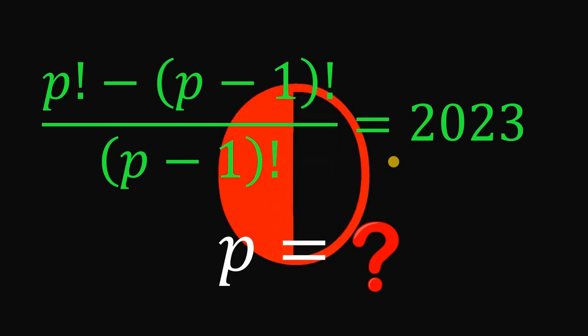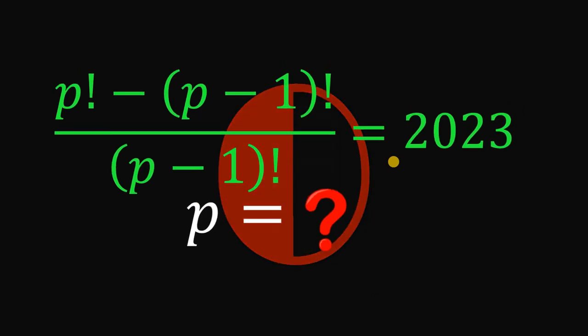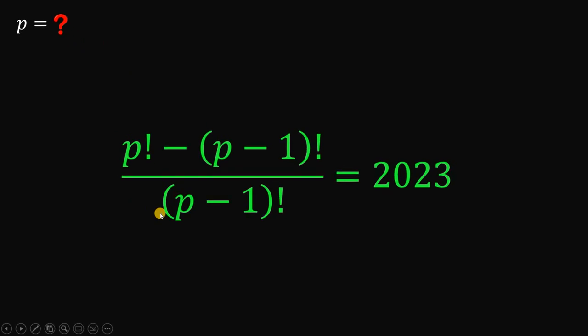And now, let's answer this question together. Our goal in this question is to solve for the value of P, given this equation P factorial minus P minus 1 factorial all over P minus 1 factorial equals 2023.